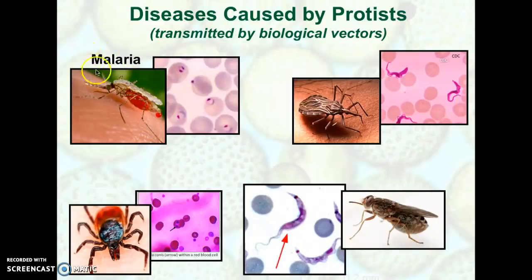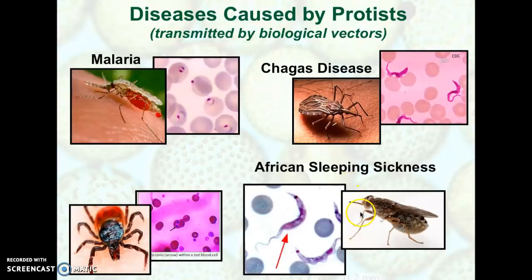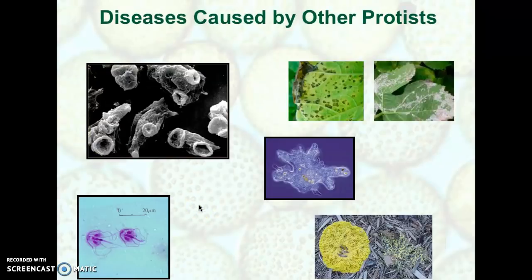Malaria is probably one of the most likely diseases you'll be asked about on your EOG — it's transmitted through the bite of a mosquito. Chagas disease is transmitted by the cone-nosed bug, found in caves. African sleeping sickness, caused by trypanosoma, is transmitted by the tsetse fly in African areas. Babesiosis is transmitted through the bite of a tick. Ticks and mosquitoes are pretty significant biological vectors.